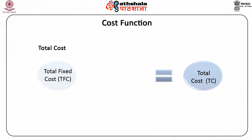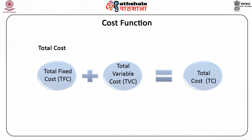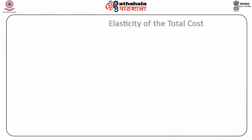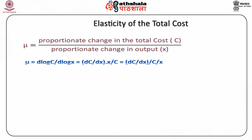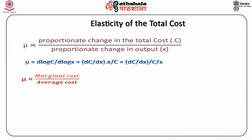Total cost is a sum of total fixed cost and total variable cost. The elasticity of the total cost, represented by mu, is given by the ratio of the proportionate change in the total cost C to proportionate change in output x. The elasticity of total cost equals d(log C)/d(log x), which equals (dC/dx) × (x/C), which equals marginal cost divided by average cost.